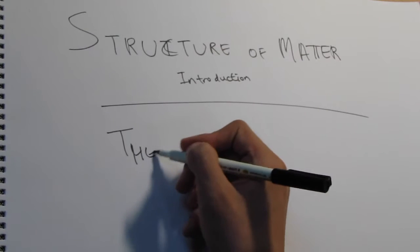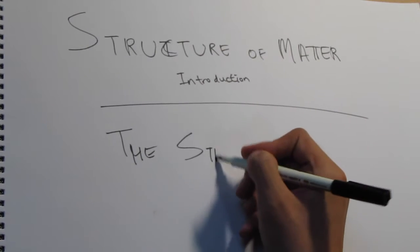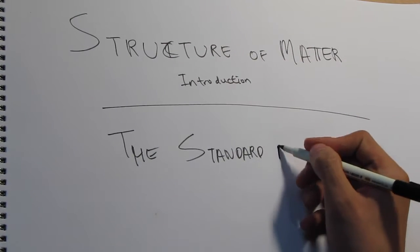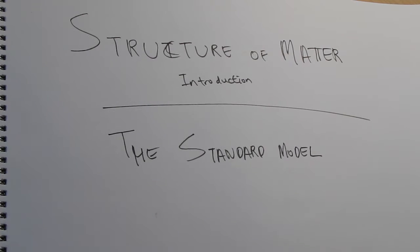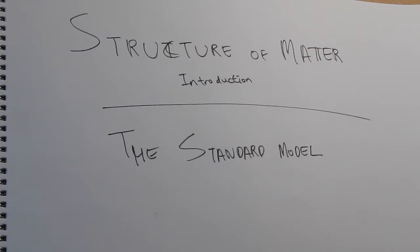The standard model is a name given to the theory of fundamental particles and how they interact. It incorporates all that is known about subatomic particles, and there are some predictions about the existence of additional particles as well. The standard model serves as the basic building block of how matter interacts and how matter is governed by fundamental forces.